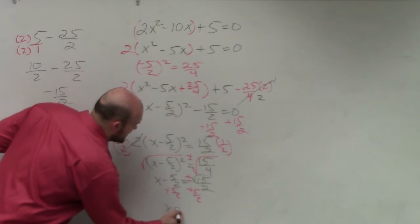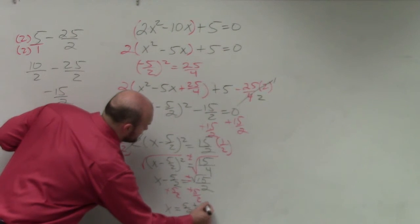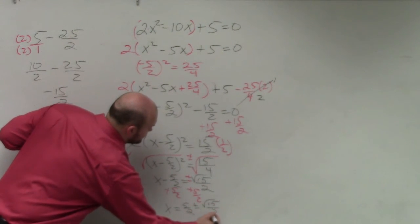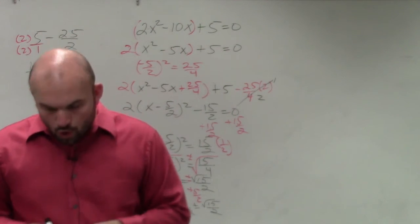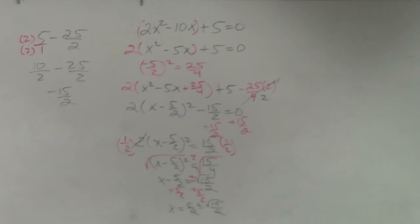So my final answer is x equals 5 halves plus or minus the square root of 15 over 2. And actually, I'll just show you guys.